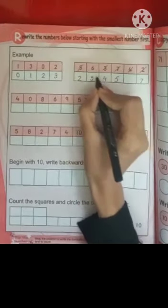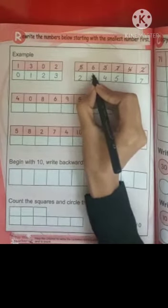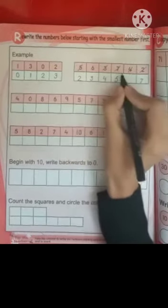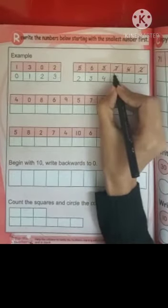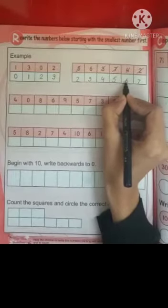The next one is 6. Students, 6 is bigger than 5 and smaller than 7, so write here 6. Very good students.